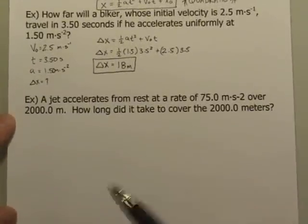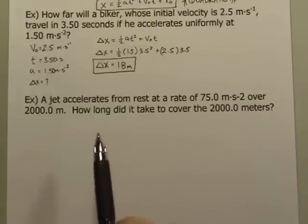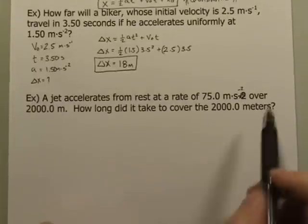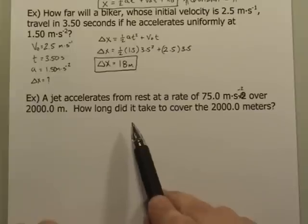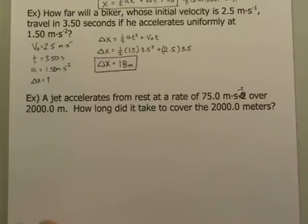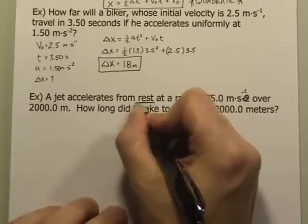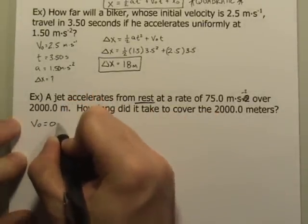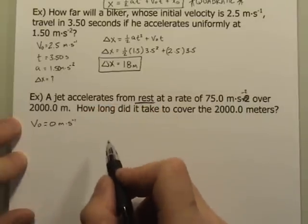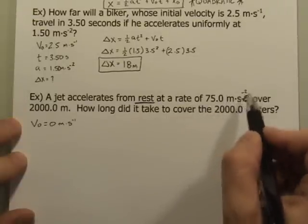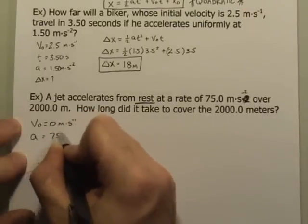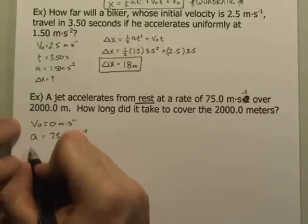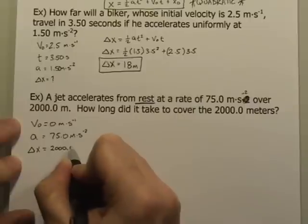If we have a jet that accelerates from rest at a rate of 75 meters per second squared over a 2,000-meter runway, how long did it take to cover the 2,000 meters? Here's the key word: accelerated from rest. From rest means the initial velocity was zero — an exact number, so we don't worry about significant figures for that. The acceleration is 75 meters per second squared, and the displacement is 2,000 meters.